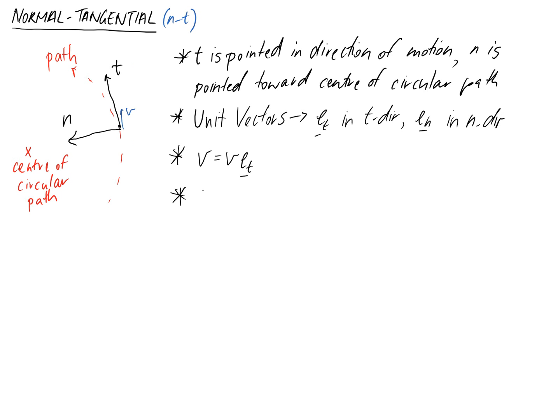For acceleration we have two components, the tangential component and the normal component. The tangential component is equal to v dot, essentially the acceleration in the t direction. And in the normal direction our component is equal to v squared over r.